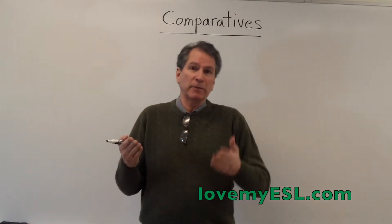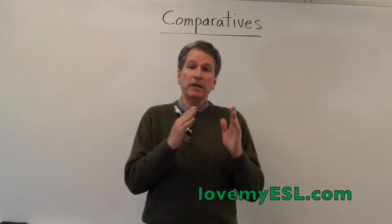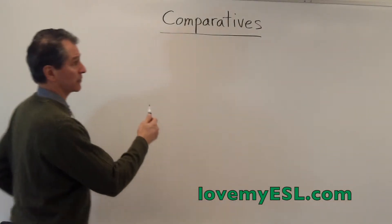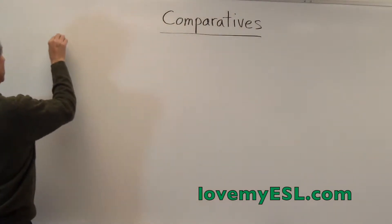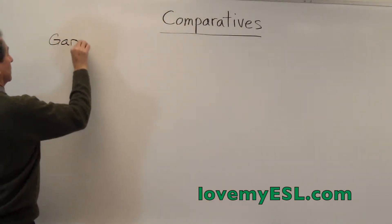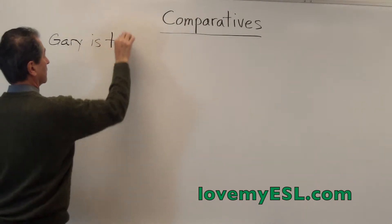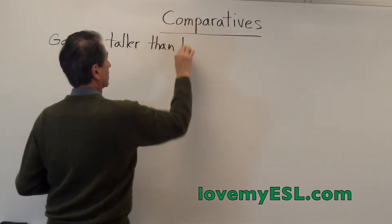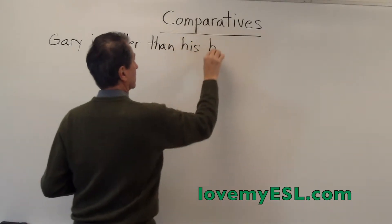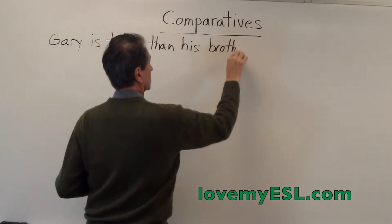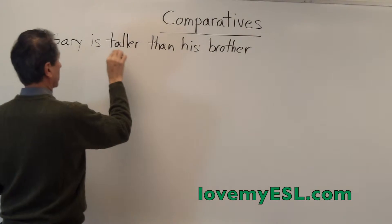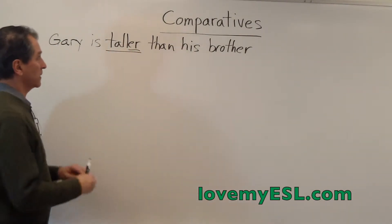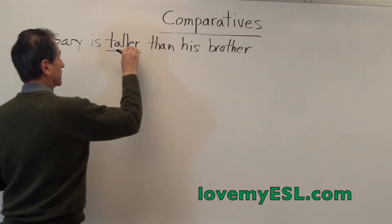For example, A is bigger than B. You put the -ER on the end when you have a one-syllable word. Here's an example: Gary is taller than his brother. T-A-L-L-E-R. So you put the -ER on the end — that tells you he's taller than his brother.